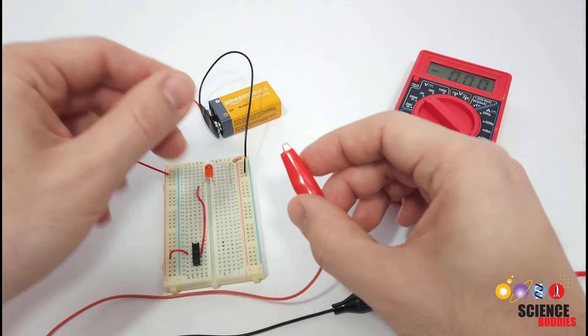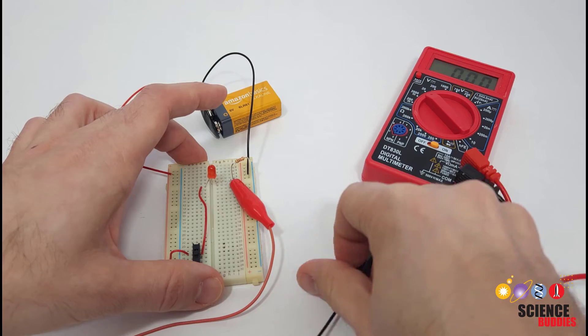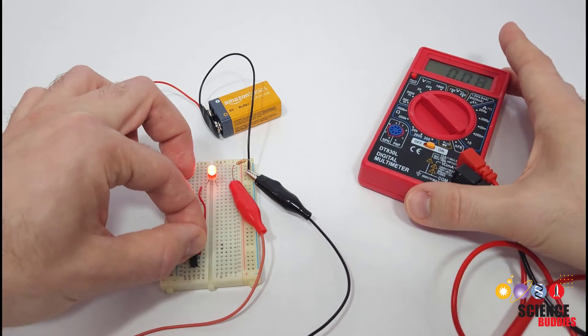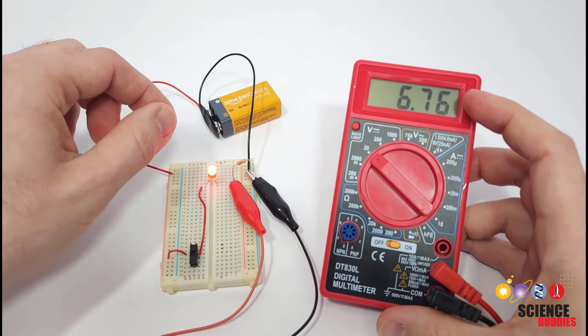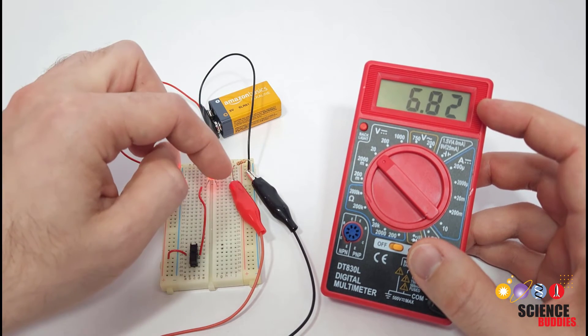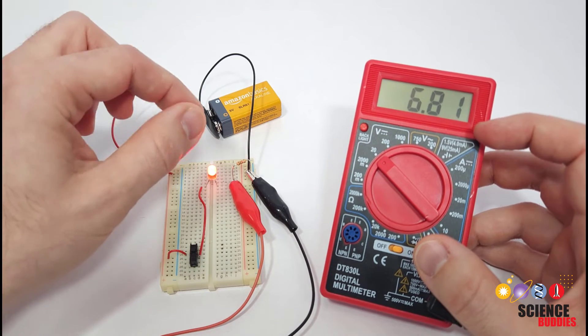And I'm going to connect one of the alligator clips to one leg of the resistor and then the other alligator clip to the other leg of the resistor. When I turn my circuit on, I should now get a positive voltage reading on my multimeter. If you get a negative reading, that just means you have your probes switched, so you can either just ignore the negative sign or swap your probes.